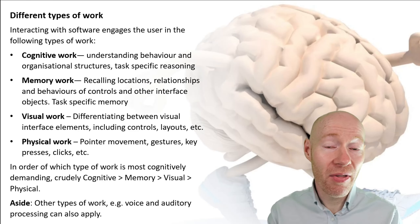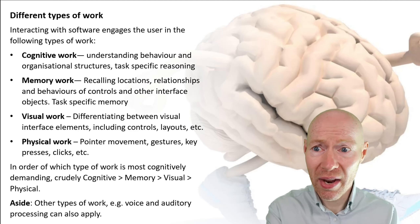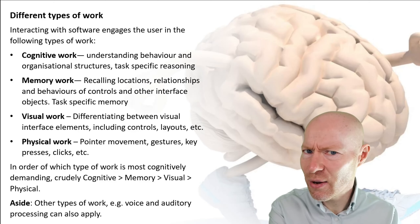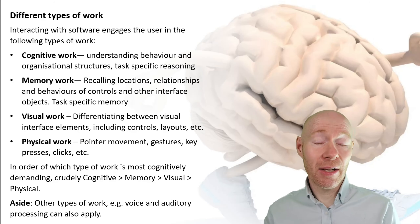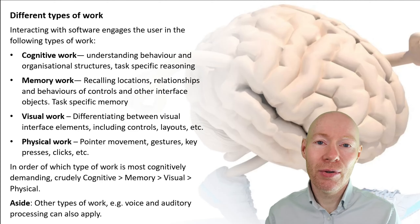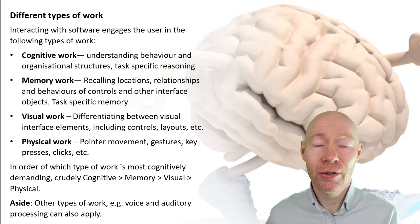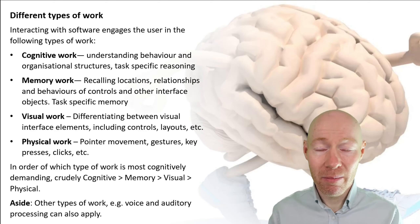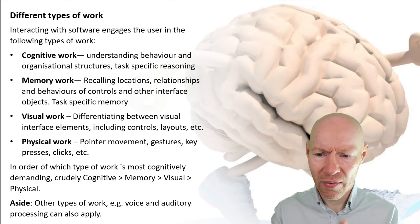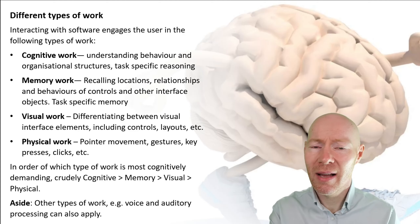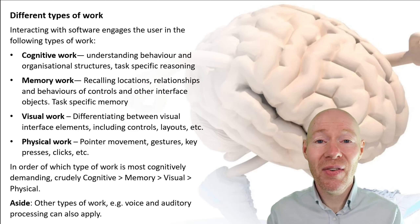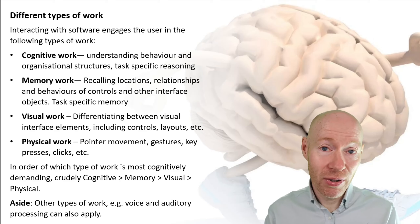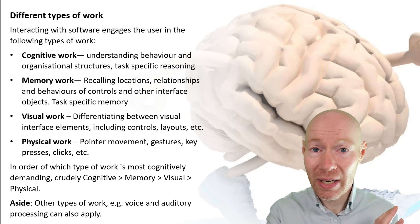Memory work involves things like recalling locations — where did I store that file — recalling the relationship or behaviours between controls, what does that icon do, and so on. It can also include task-specific memory where the user has to remember certain things about the task they are doing. We don't want our user to have to memorise what a control does or where to go next. We want to get rid of that, and make it as easy as possible for the user to locate and retrieve those aspects, or not even have a need to do so.